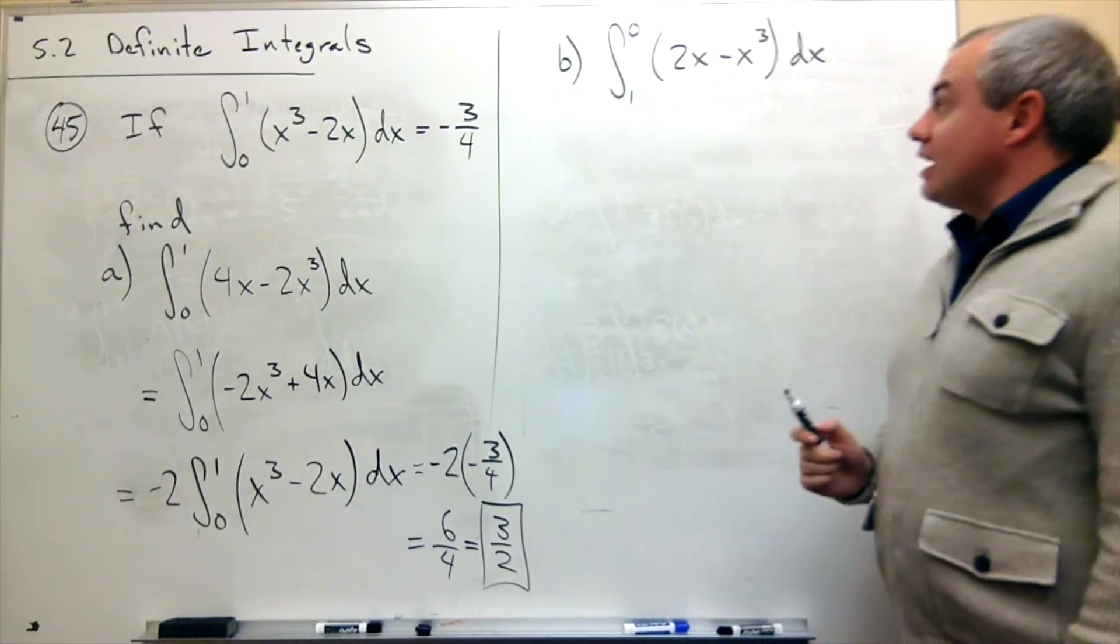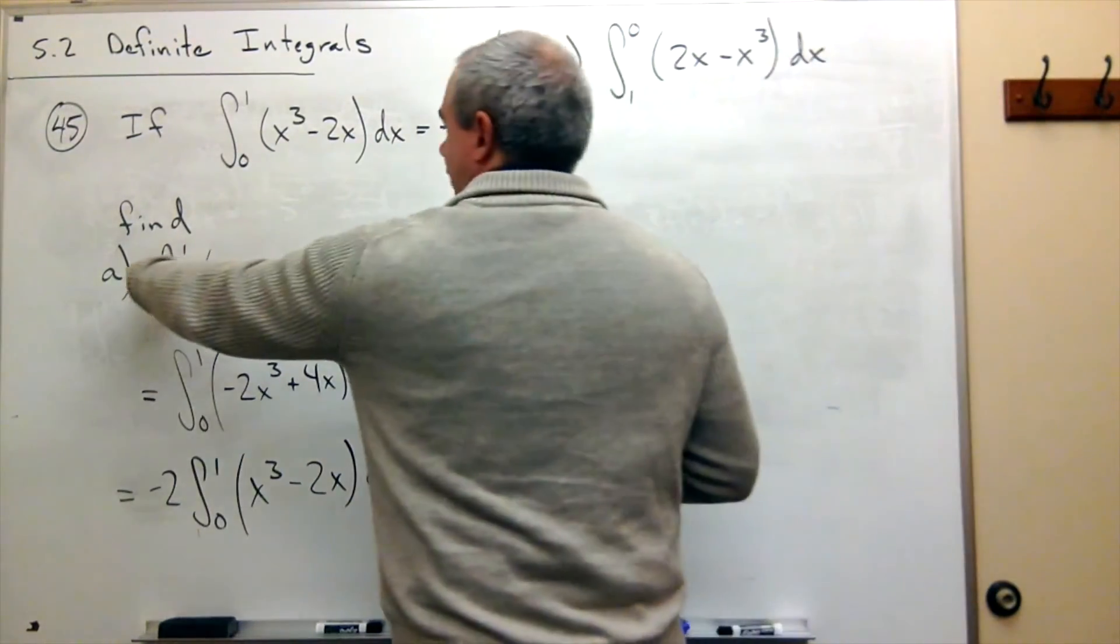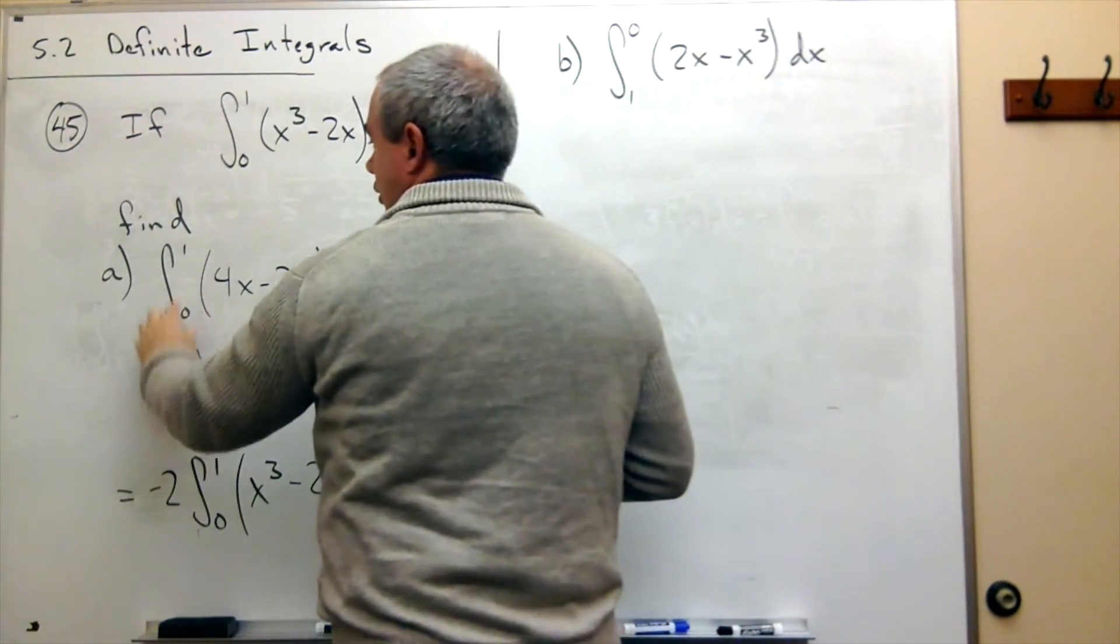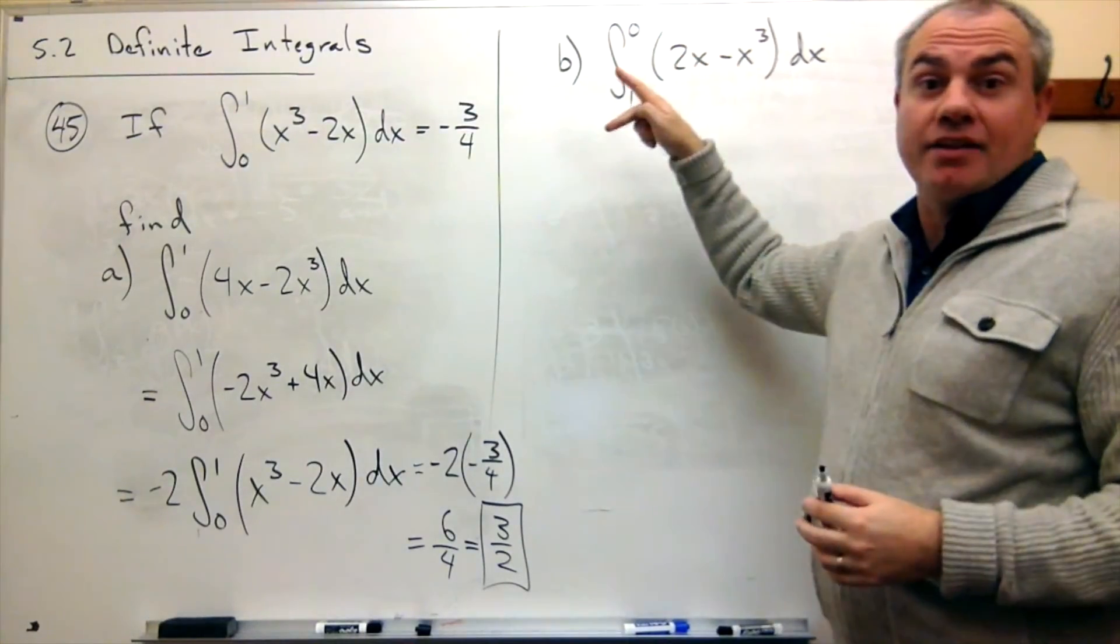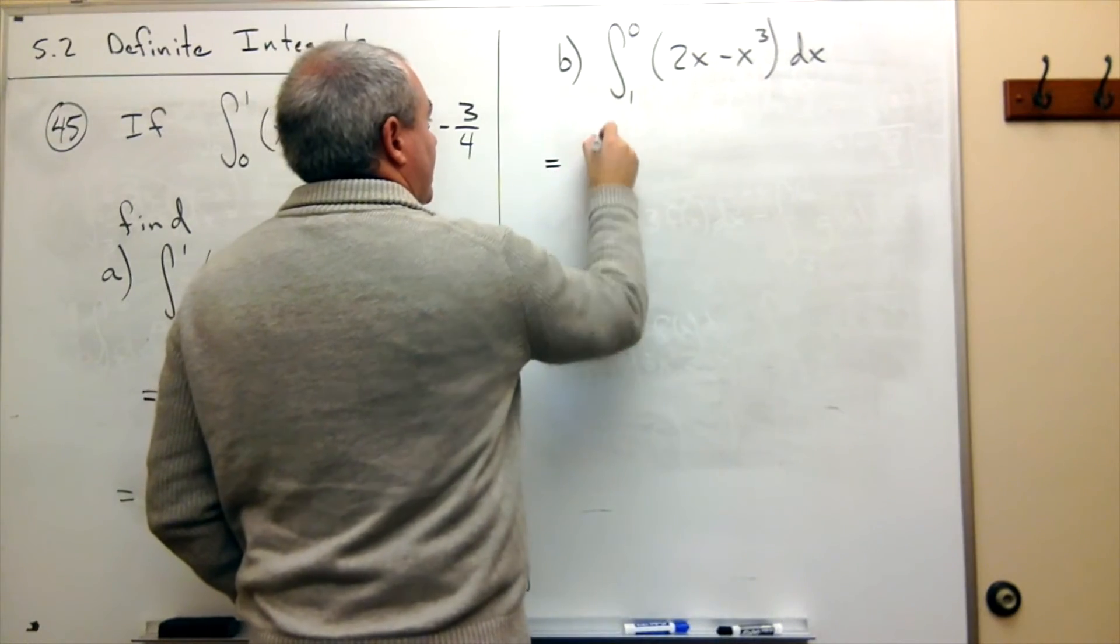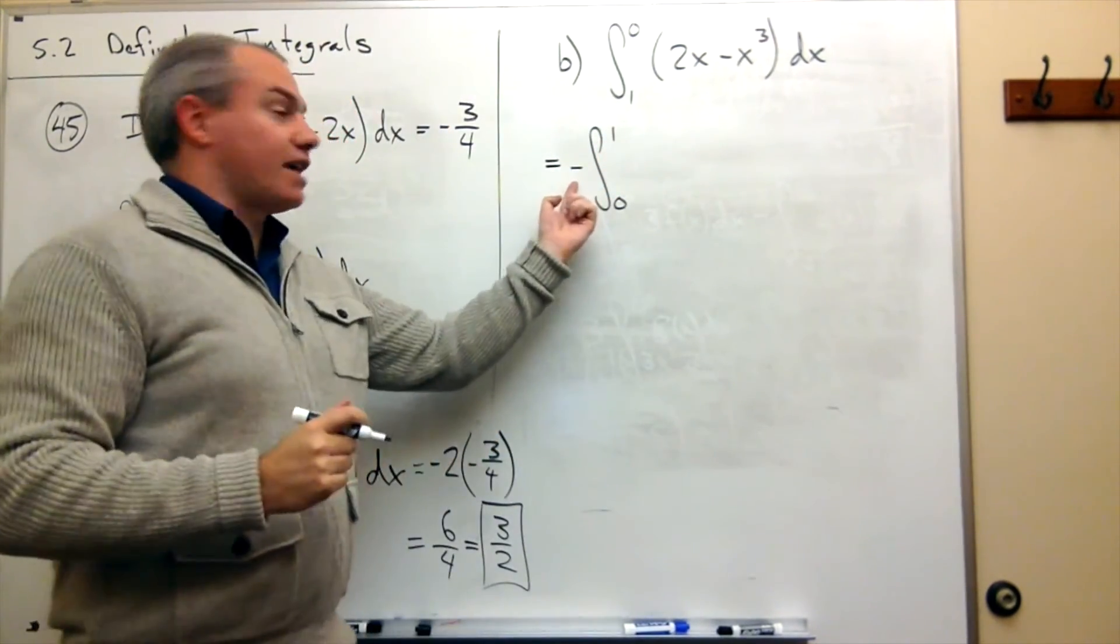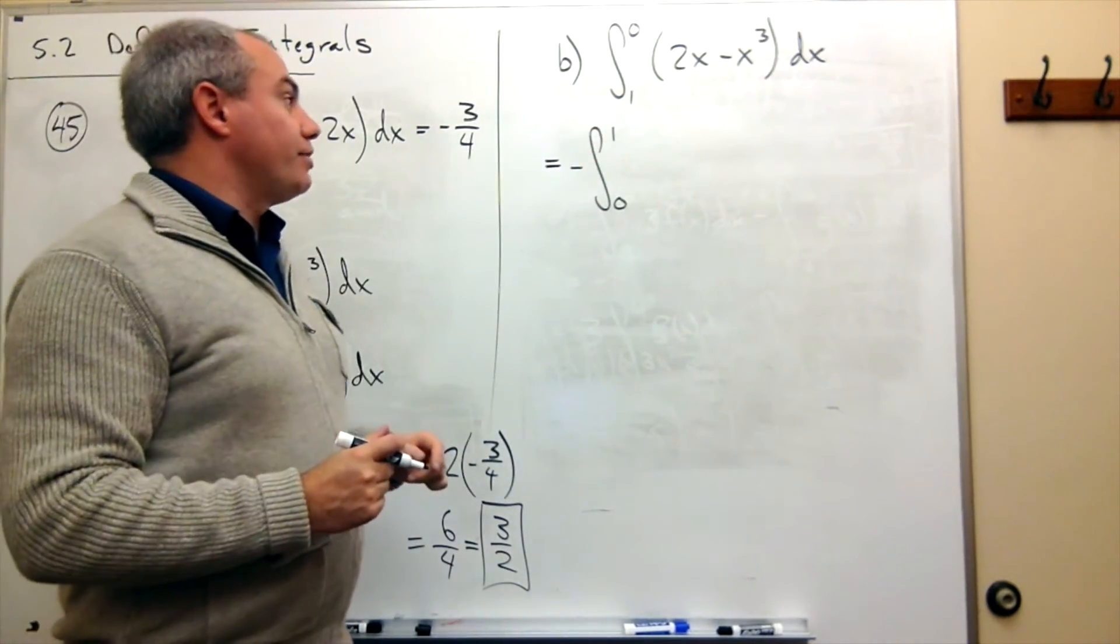For part B, I look at the limits of integration, and they don't match up. This one's going from 1 to 0. This one's going from 0 to 1. So the first thing that I would do is let's flip that. If I flip it, then I get the integral from 0 to 1, but I have to add that negative sign out in front of the integral for flipping the limits of integration.